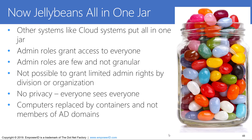The admin roles in these systems are very non-granular. They typically grant access to all the users — for example, global admins in Office 365 granting access to all the users. The admin roles in these applications are really few and too broad, granting access to large portions of the users and granting too many privileges. So it's very difficult in this model to limit admin rights as to which admins can see and manage which users.